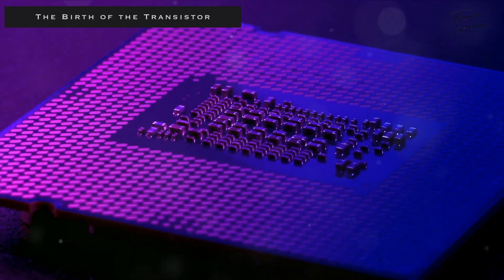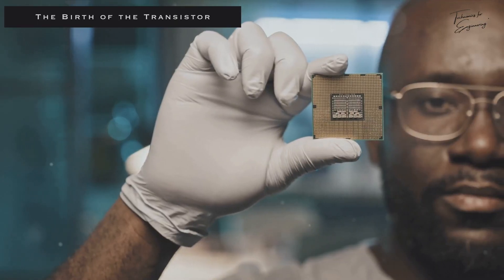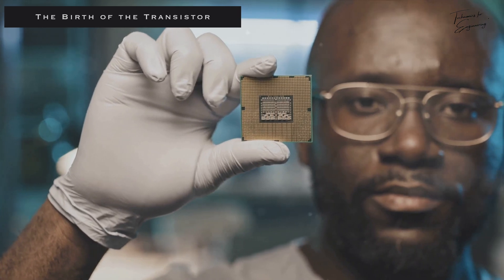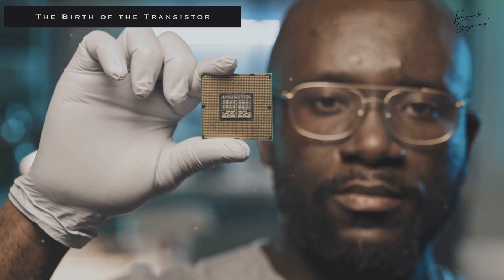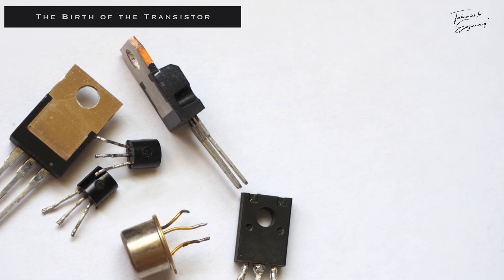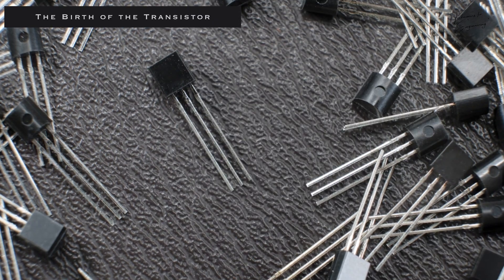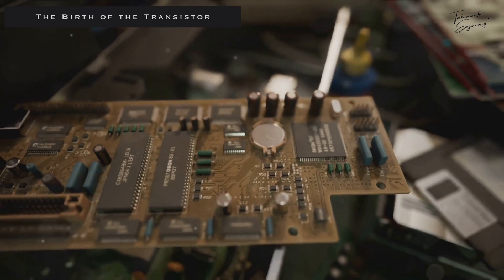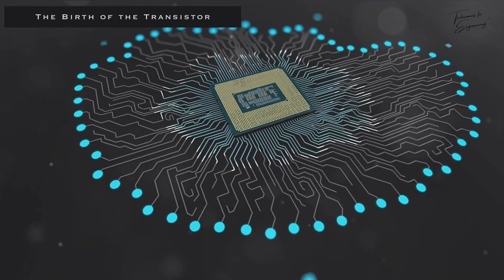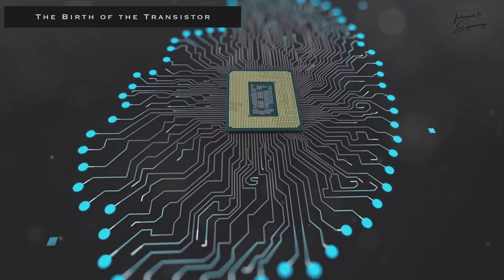The journey of the transistor began in the early 20th century, but it wasn't until 1947 at Bell Labs that the first practical point-contact transistor was invented. This breakthrough by John Bardeen, Walter Brattin, and William Shockley ushered in the era of modern electronics, earning them a Nobel Prize. Their invention provided a robust and compact alternative to the bulky and delicate vacuum tubes of the day, paving the way for the miniaturization of electronic devices.